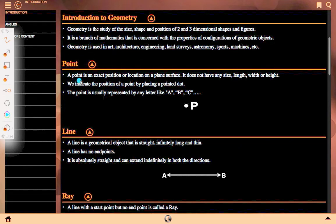Point: A point is an exact position or location on a plane surface. It does not have any size, length, width or height. We indicate the position of a point by placing a pointed dot. The point is usually represented by a letter like A, B, C. Here the dot is represented by P.